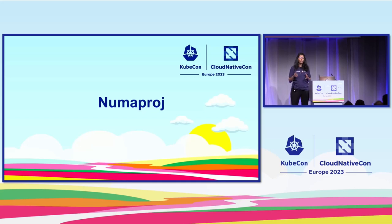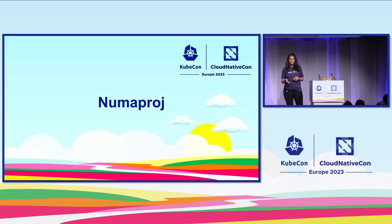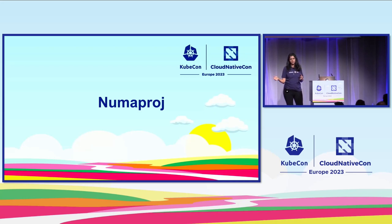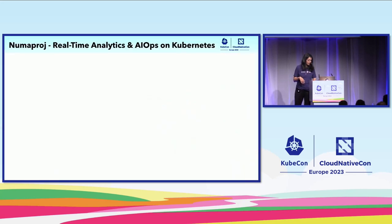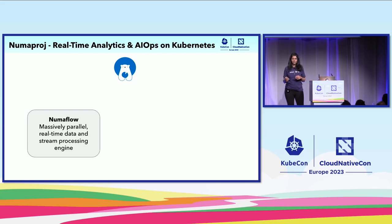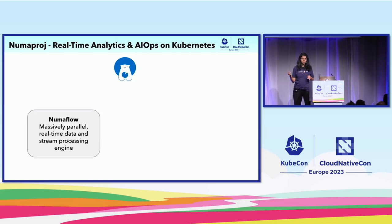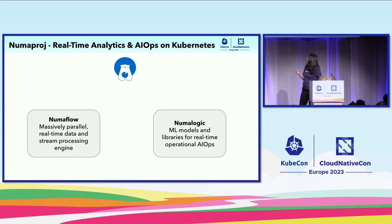NumaProj is an open source project incubated at Intuit, meant for real-time analytics and AIOps on Kubernetes. Since they're part of the larger platform team, we worked closely with them to get cluster golden signals and anomaly detection. NumaProj has a few different projects, but the main core ones are NumaFlow — a massively scalable real-time stream processing engine — and NumaLogic — a collection of ML models and libraries that help with anomaly detection.